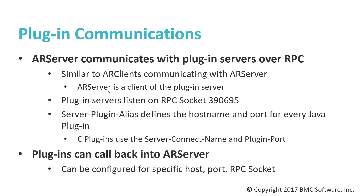ARServer communicates with plugin servers over RPC — similar to the way AR clients, including the user tool, Developer Studio, and mid-tier, communicate with ARServer. In this case, ARServer is actually a client of the plugin server; the plugin server is the server listening for RPC calls made from ARServer. Plugin servers listen on port 390695. The server plugin alias is a key parameter that defines the host name and port for every Java plugin. When ARServer needs to communicate with any Java plugin, it uses the server plugin alias to identify the host and port, always connecting on RPC socket 390695.